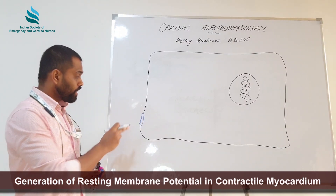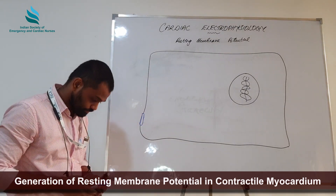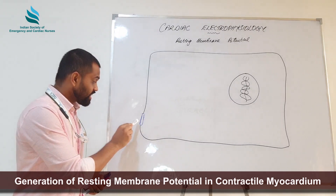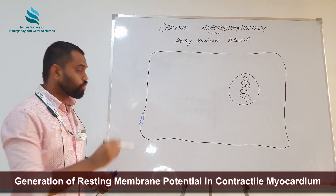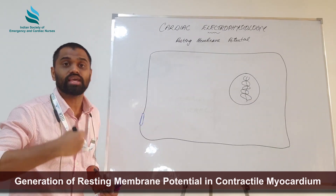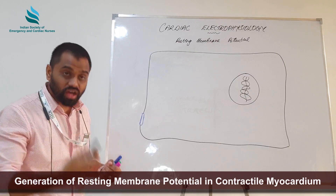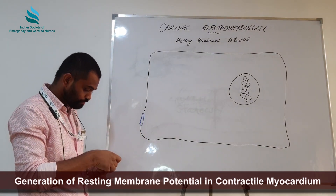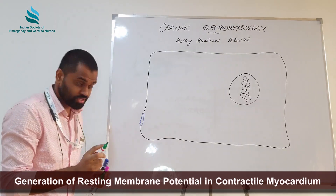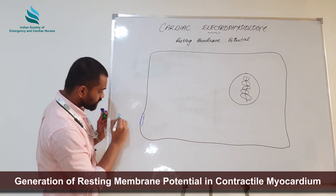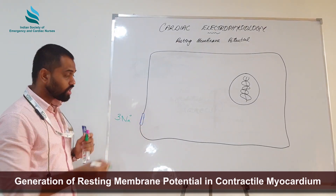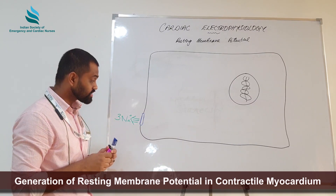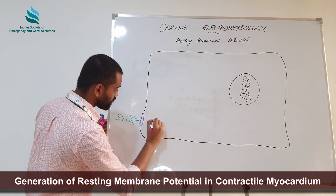Sodium-potassium ATPase proteins are distributed across several parts of the myocardial cell membrane. What are the functions of this channel? These are active transport channels, meaning they use ATP for their function. They work continuously, and by burning one single molecule of ATP, they push three sodium ions outside the cell.